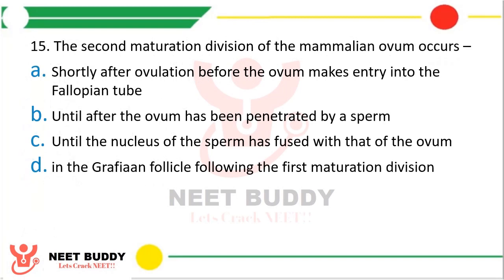Question 15: The second maturation division of mammalian ovum occurs? Option A: Shortly after ovulation before the ovum makes entry into the fallopian tube. Option B: Until after the ovum has been penetrated by a sperm. Option C: Until the nucleus of sperm has fused with the ovum. Option D: In the Graafian follicle following first maturation division. The correct answer is Option B — until the ovum has been penetrated by a sperm.